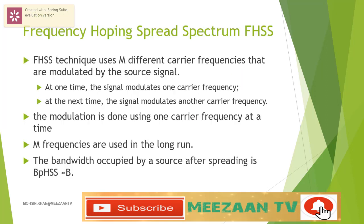The FHSS technique uses M different carrier frequencies that are modulated by the source signal. At one moment, the signal modulates one carrier frequency; at the next moment, the signal modulates another carrier frequency. Although the modulation is done using one carrier frequency at a time, M frequencies are used in the long run. The bandwidth occupied by a source after spreading, B_FHSS, is much greater than B.